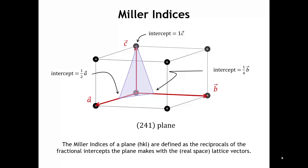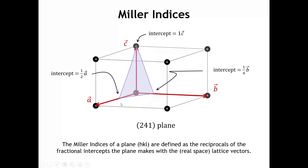Let's start with a concept from solid-state chemistry: the idea of a plane in a crystal, whose direction is given by the Miller indices. If we take a plane signified by this blue triangle — it's actually an infinite plane, but what we see here is just the part within the unit cell — we look at where that plane intercepts the lattice vectors. It intersects the A lattice vector at one-half of A, the B lattice vector at one-quarter of B, and the C lattice vector at one.